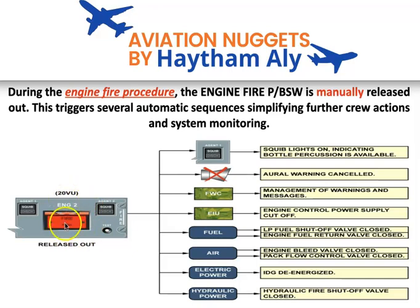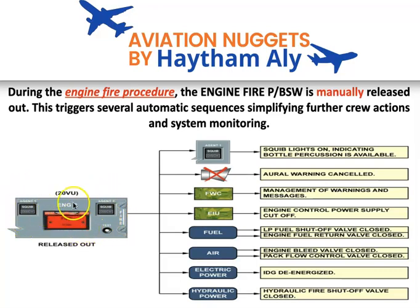So all these steps are simplified by releasing the engine fire push button. When you release it, you will hear a master caution indicating that some systems are deactivated. Only after finishing the isolation procedure — like fire push button release — can you extinguish the fire using the halon gas bottle or cartridge agent one and agent two. Squib on agent one and squib on agent two will be visible.